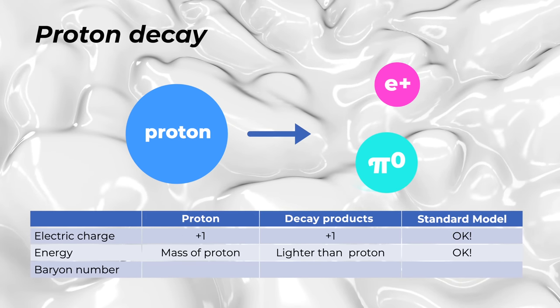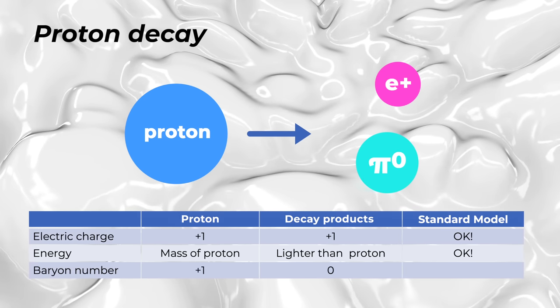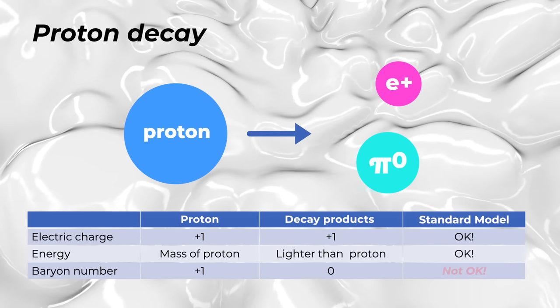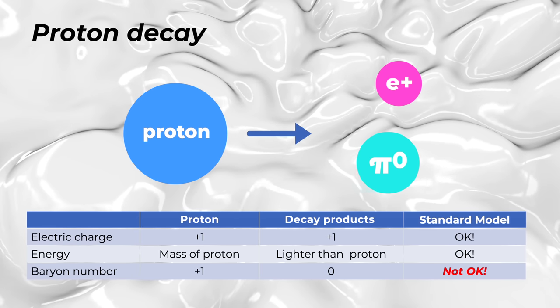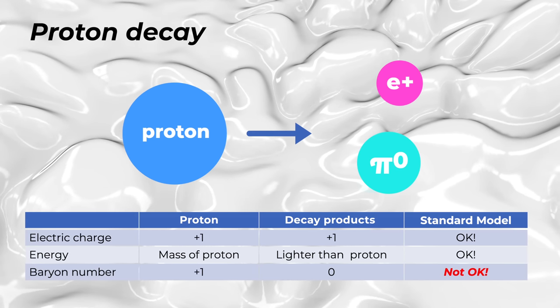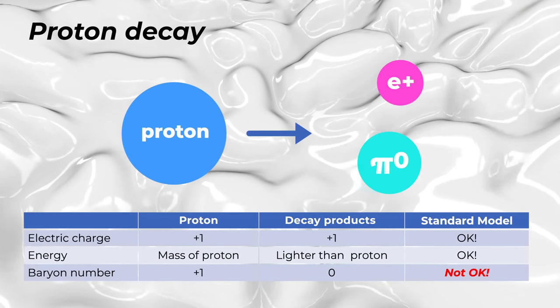On the other hand, we see that before the decay the baryon number is plus one and after the decay it's zero. So this decay is forbidden in the standard model, but it's allowed in some possible replacements of the standard model. Thus, observing this decay would be an important validation of new physics theories.